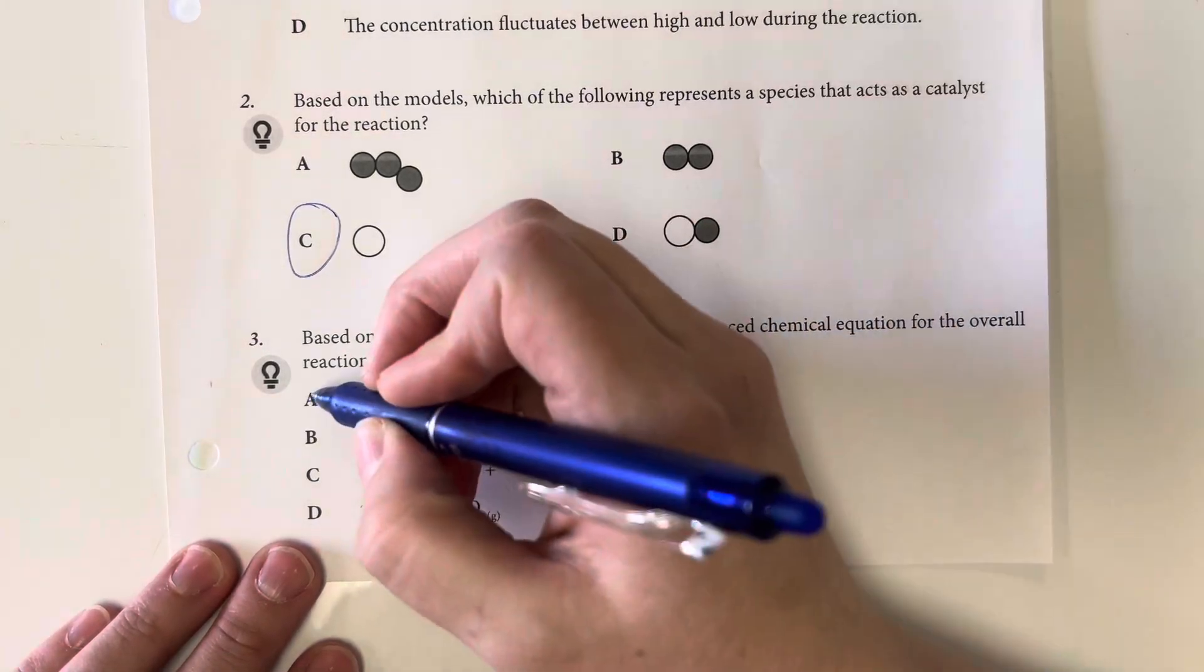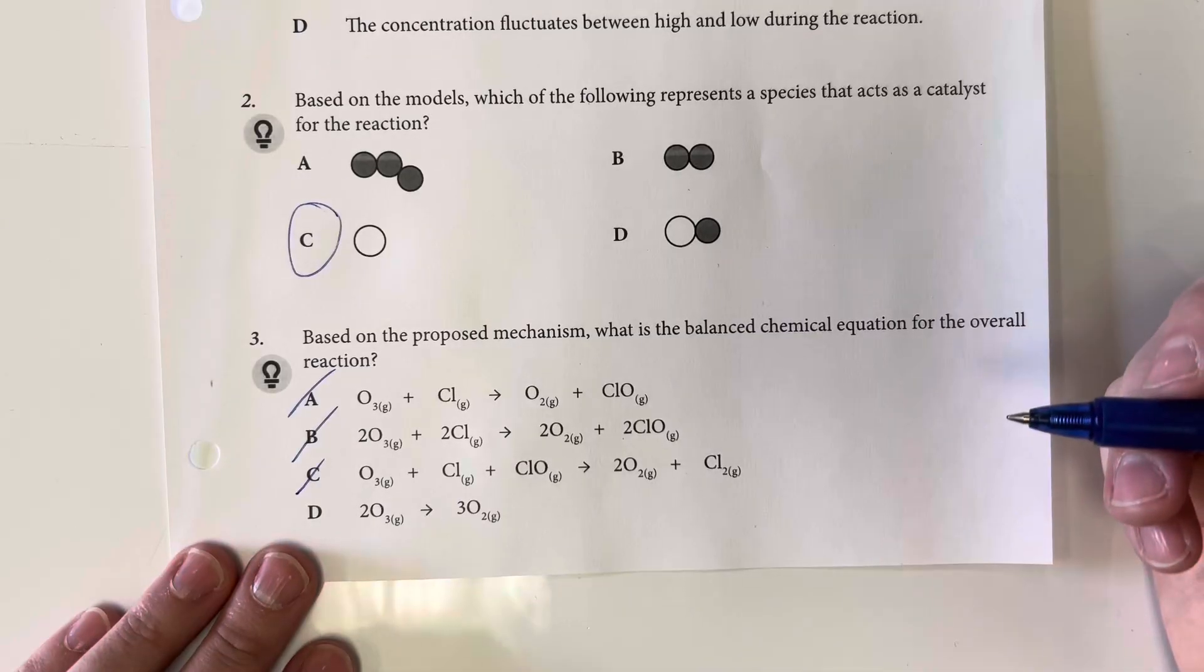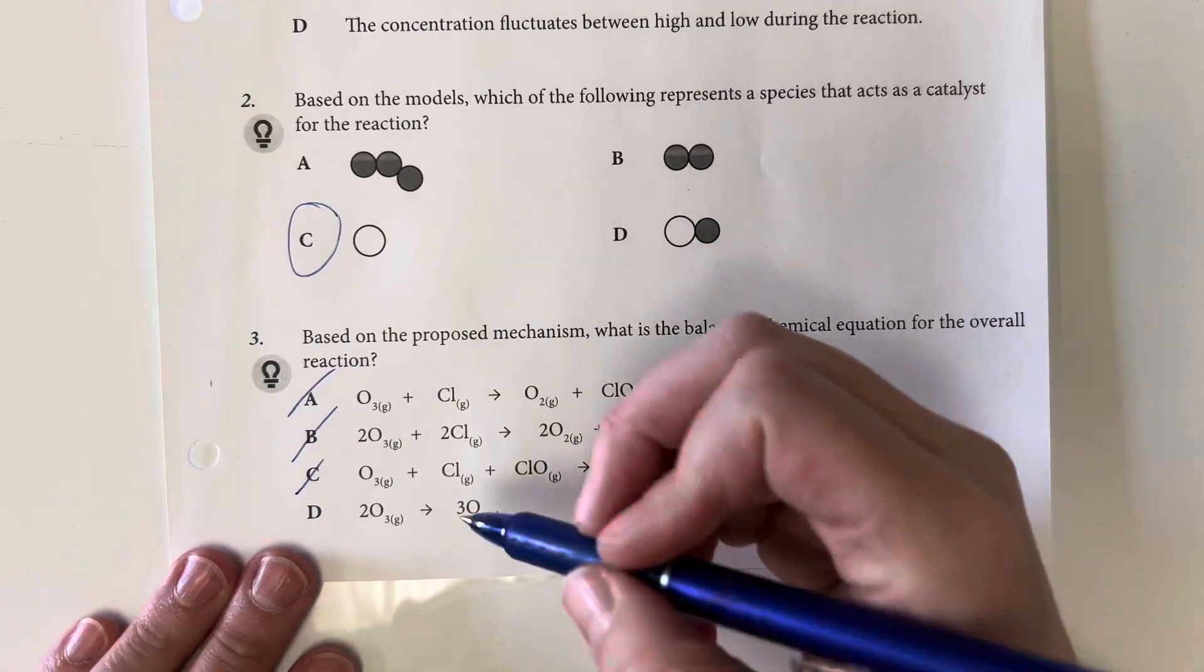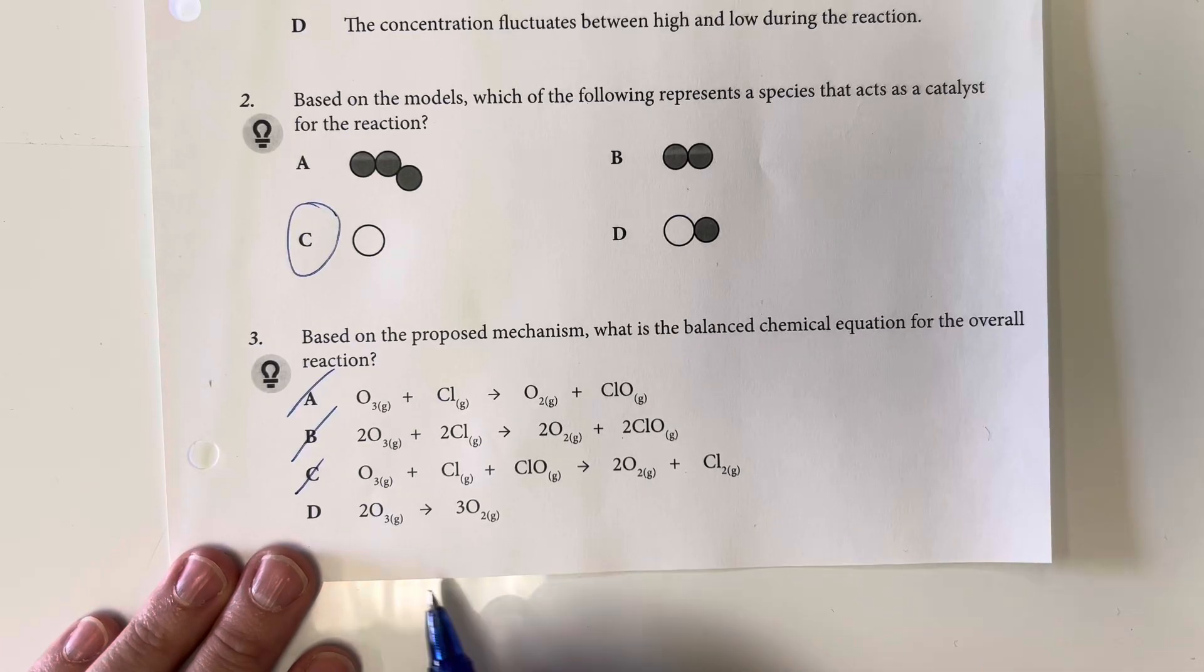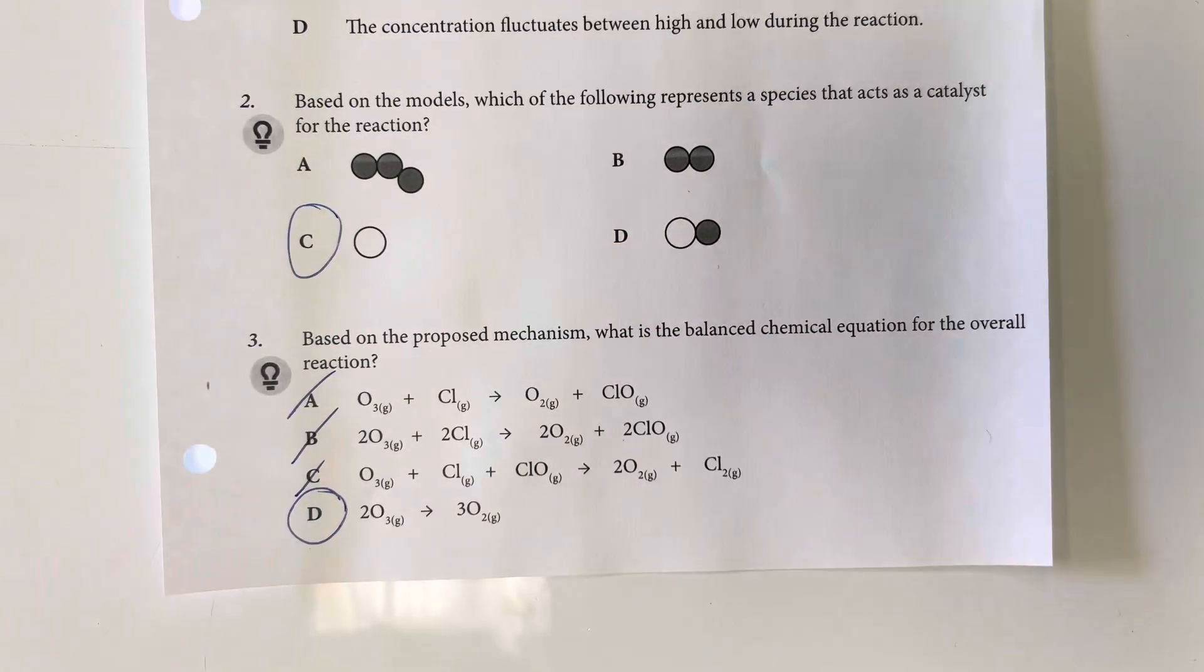So these three options all include the catalyst of chlorine, so that is going to be eliminated very easily. And then we have ozone to oxygen as our only remaining option, so that is going to be our best choice.